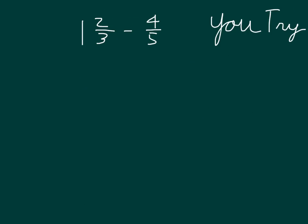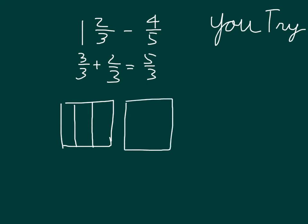Here's a problem for you to try. We have 1 and 2 thirds minus 4 fifths. We know that 1 is equal to 3 thirds. We put it together with the 2 thirds. We do get 5 thirds. So we're looking at 5 thirds minus 4 fifths. At that point we can model them for 5 thirds. We know that it is more than 1. And we're looking at thirds to begin with. And then so this right here is that 1 and 2 thirds.